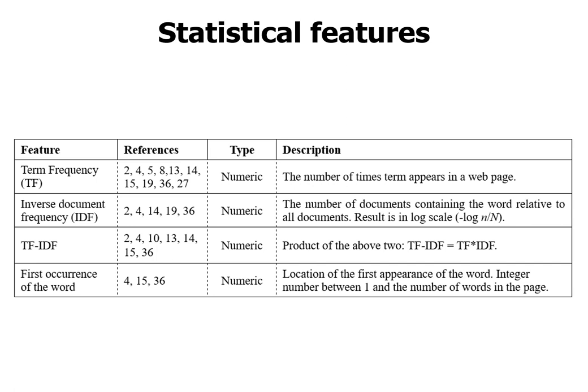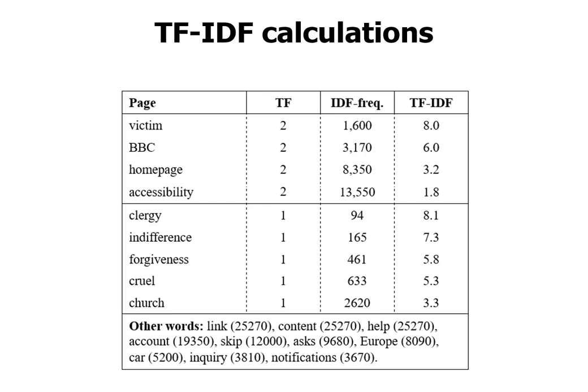Other statistical features might consider where a word appears on the page — in the beginning or at the end — and how dispersed it is: does the word appear everywhere in the document or only in one part? These localized statistics can also be used.